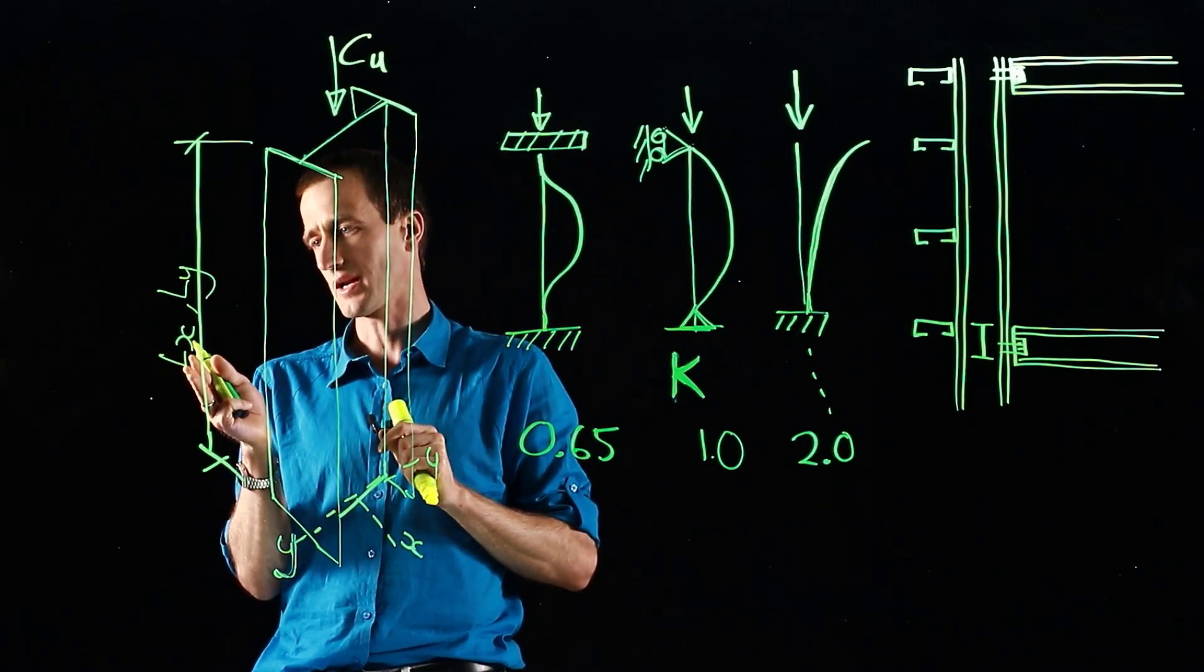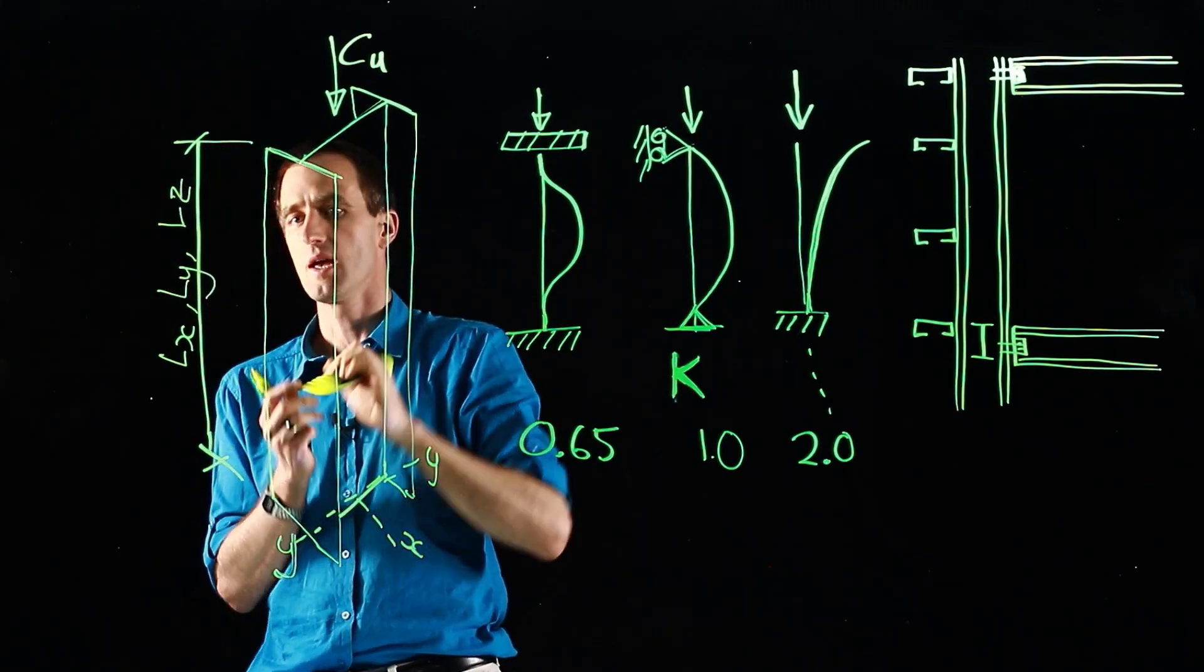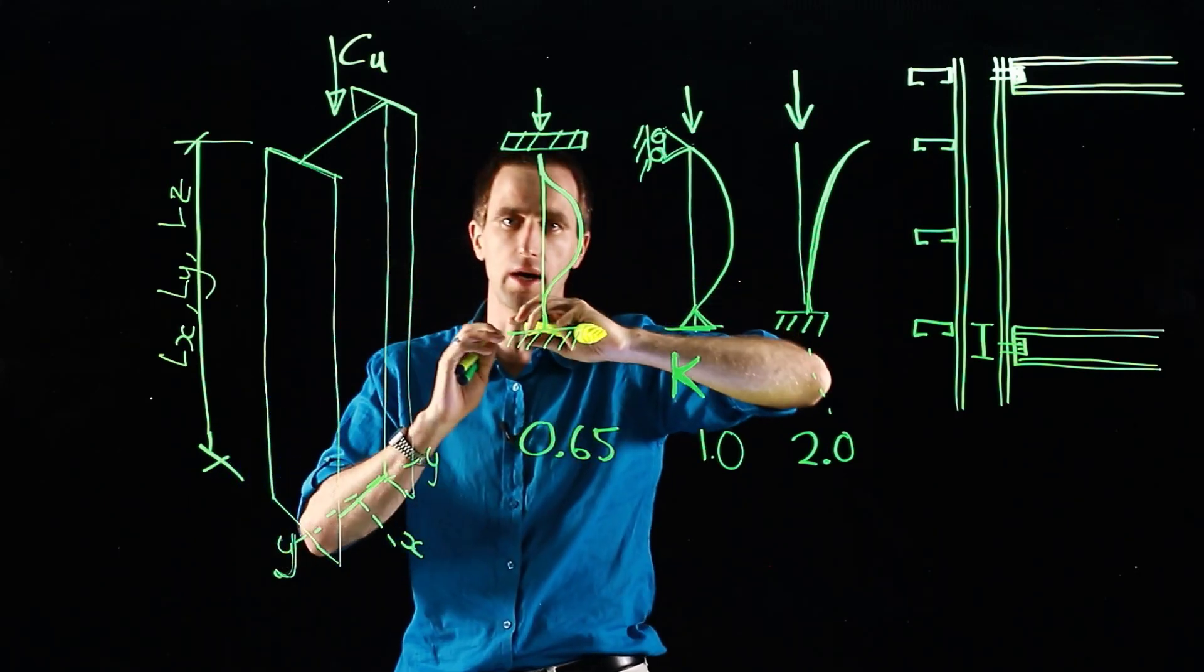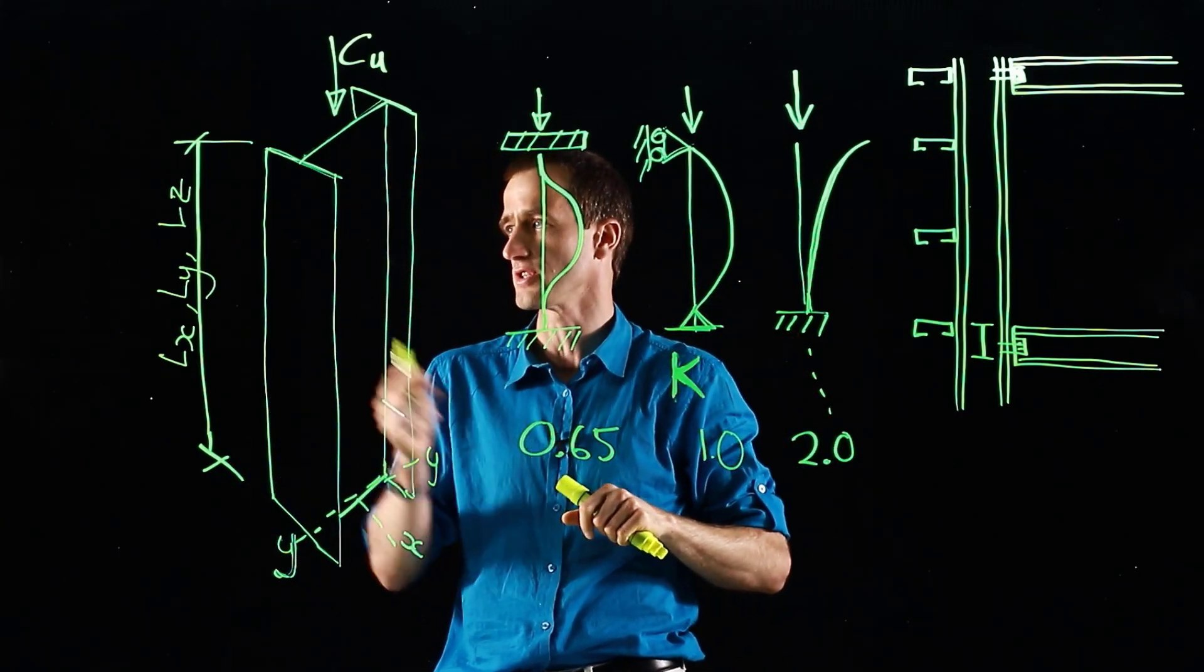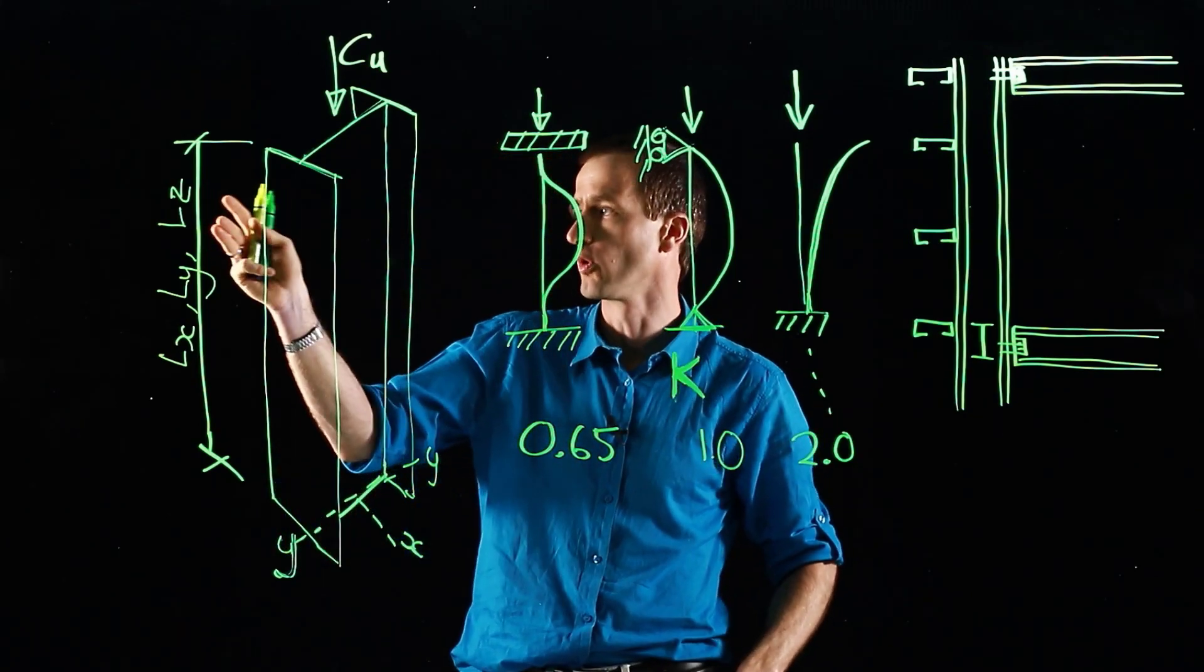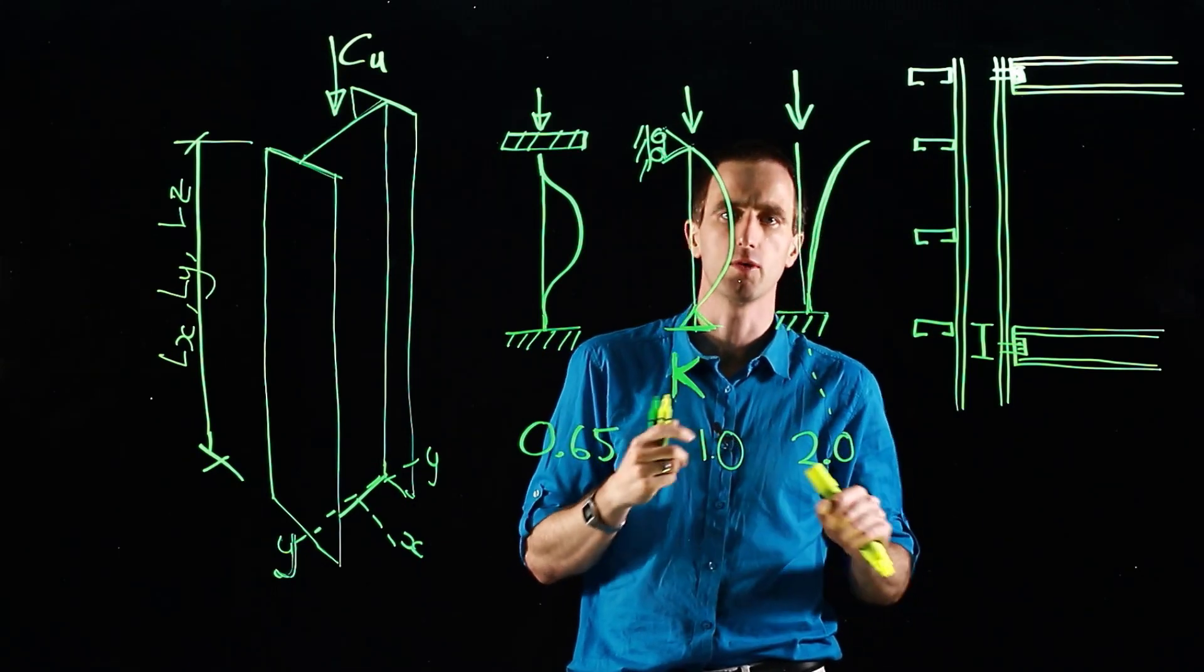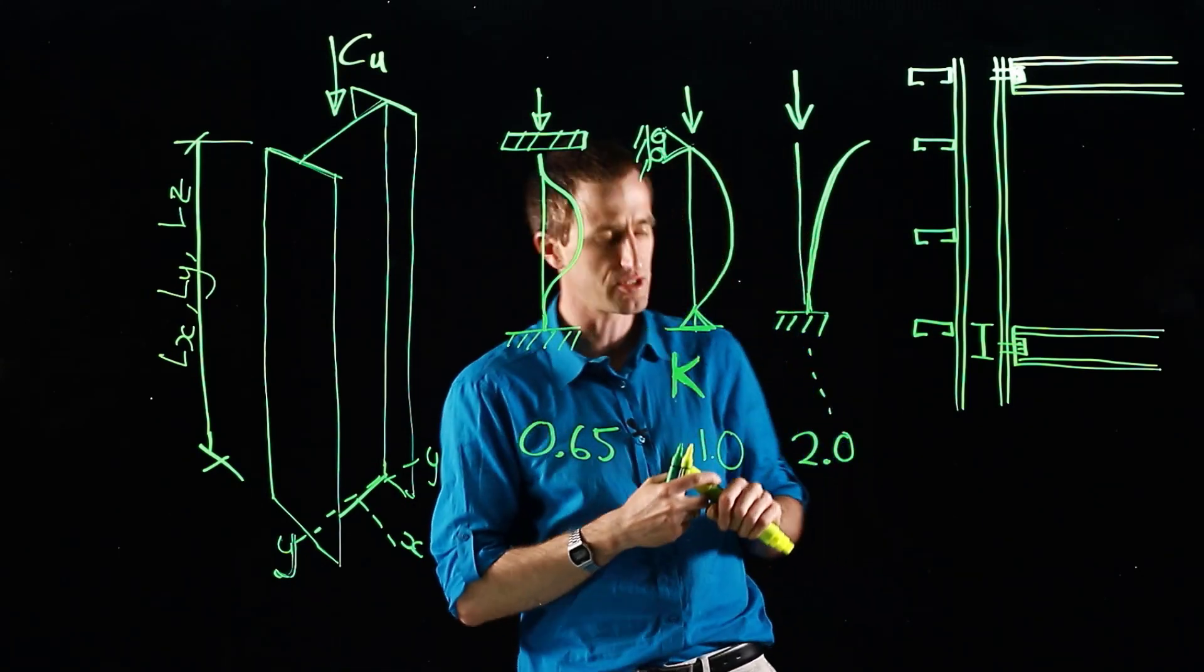So LX buckling about X, LY buckling about Y. And then also LZ, our torsional length, about what distance can the section twist. And this is also harder to define. In a typical doubly symmetric section, we don't normally account for torsion, but it is important to understand how it behaves and how to design for it.